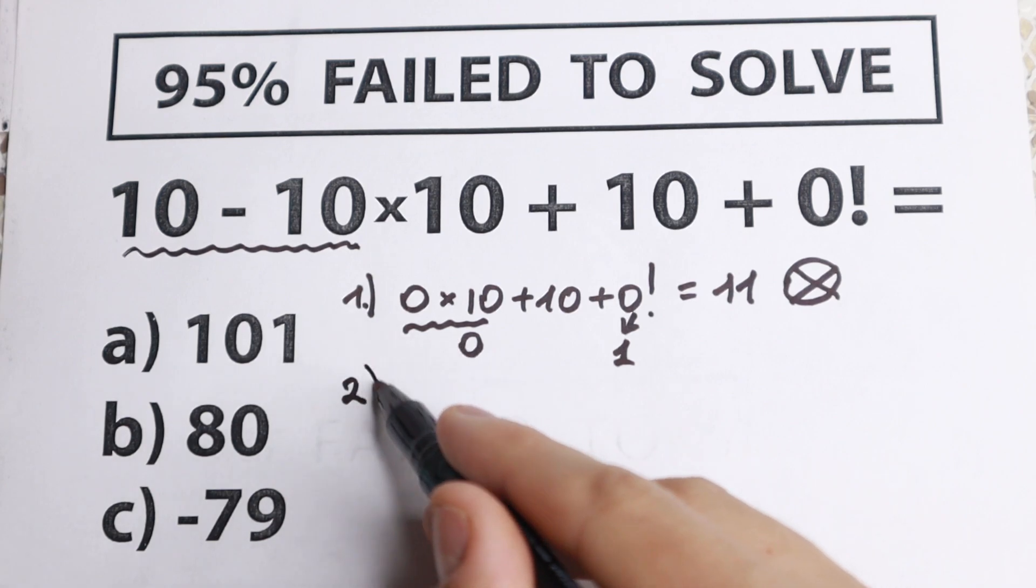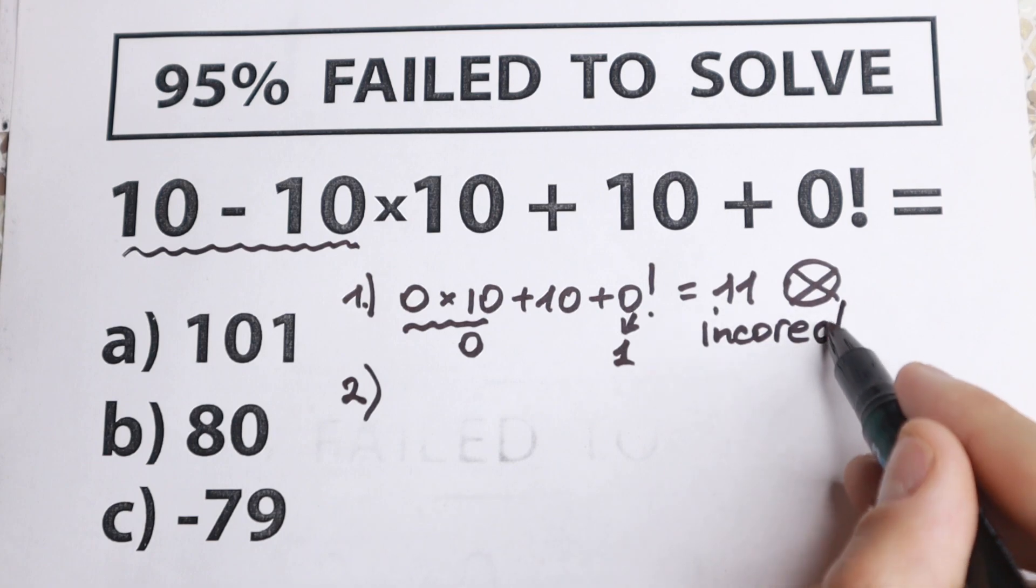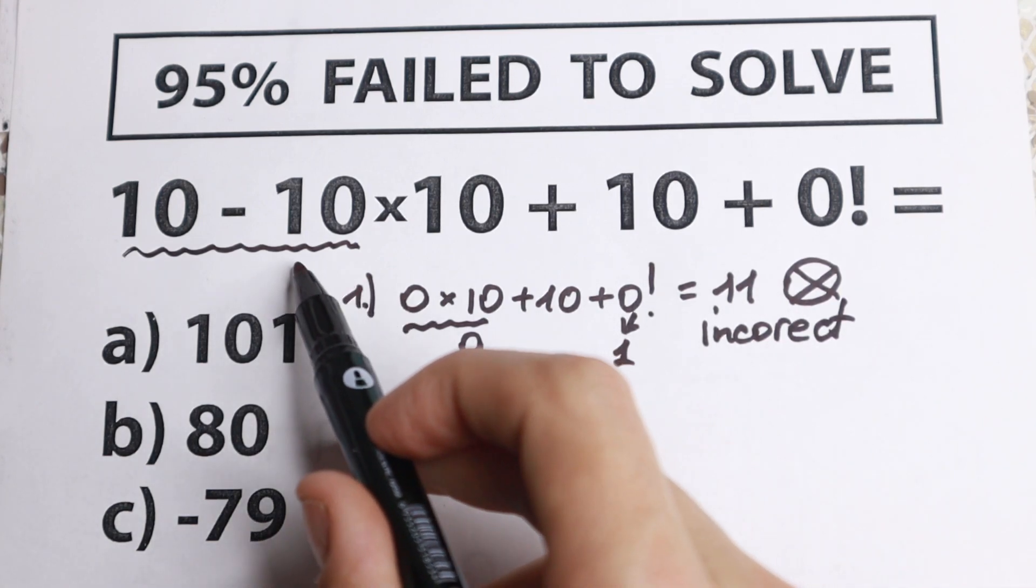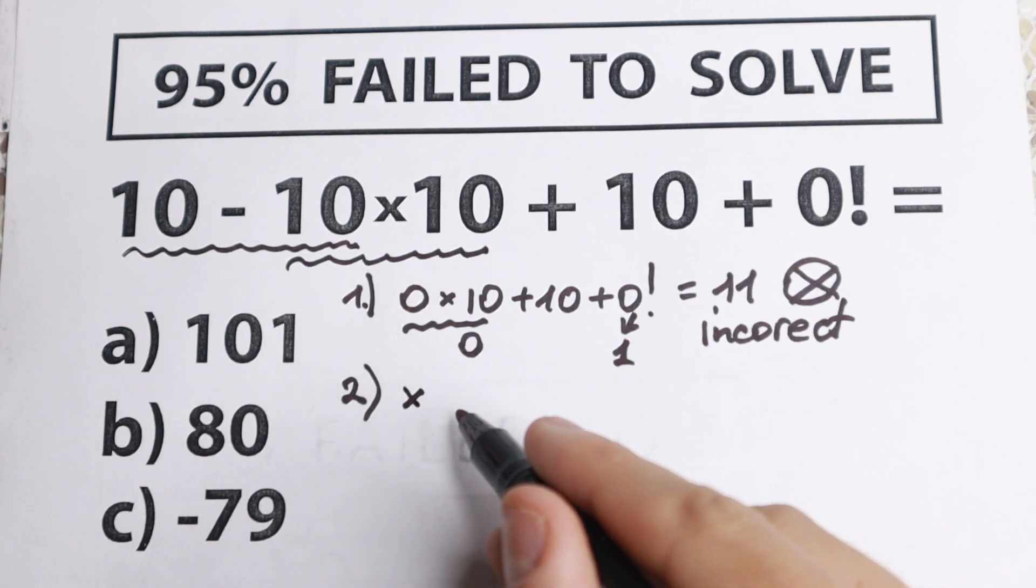How can I solve it? This one is incorrect. But how can we solve this problem correctly? We need to start with multiplication and division.